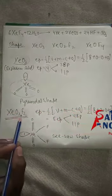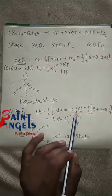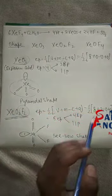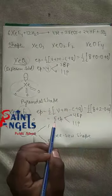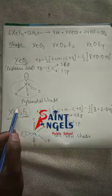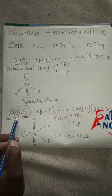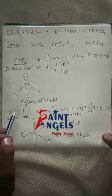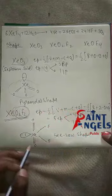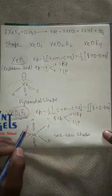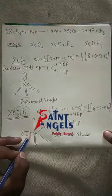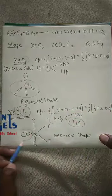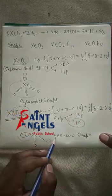For XeO2F2: electron pairs = half(8 + 2) = 5, because there are 2 monovalent fluorine atoms. Out of 5 electron pairs, 4 are bond pairs and 1 is a lone pair. For 5 electron pairs, the parent geometry is trigonal bipyramidal. With one lone pair placed at the equatorial position, the shape of XeO2F2 is seesaw shape.